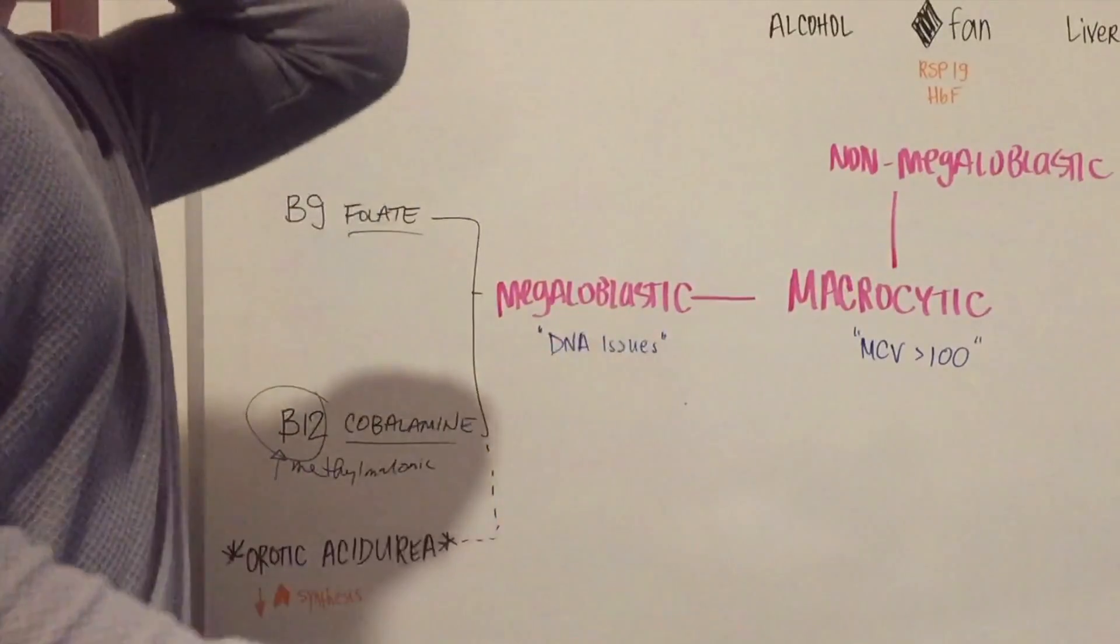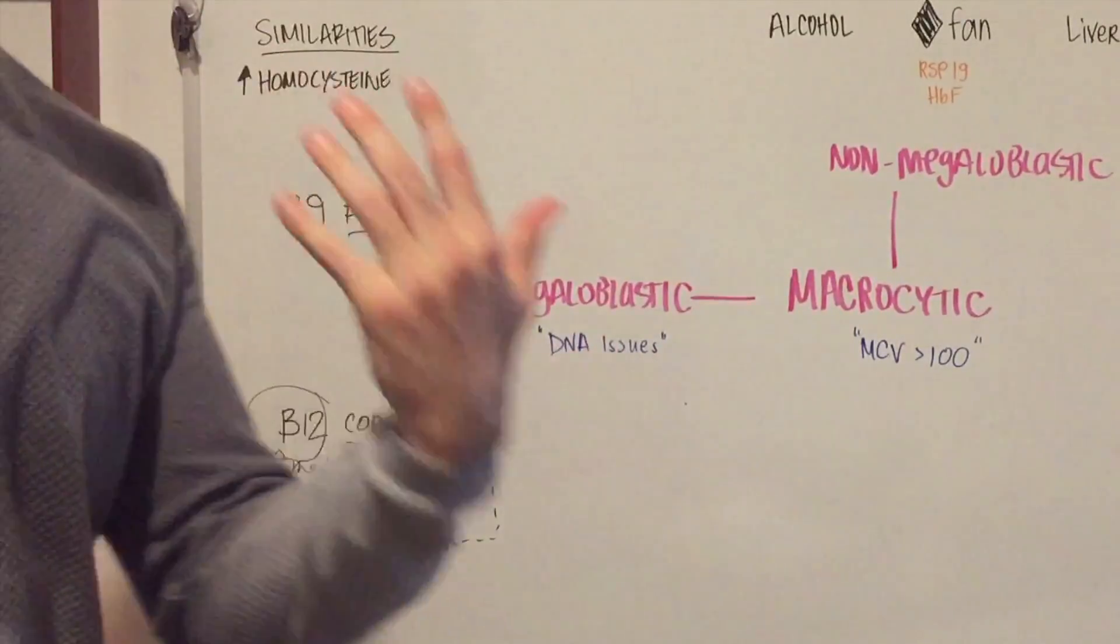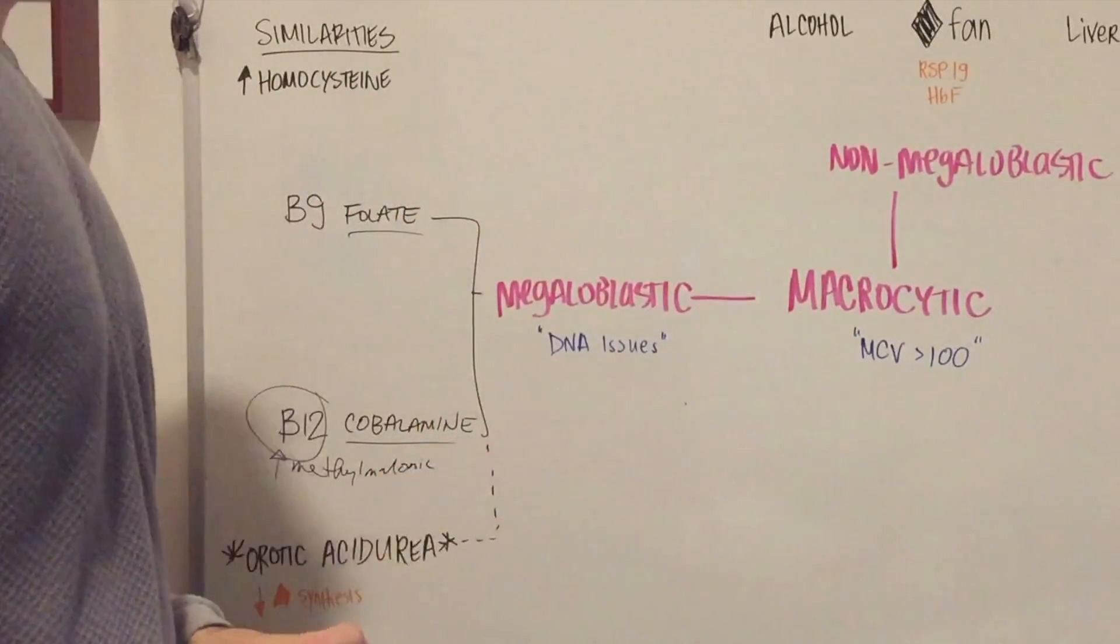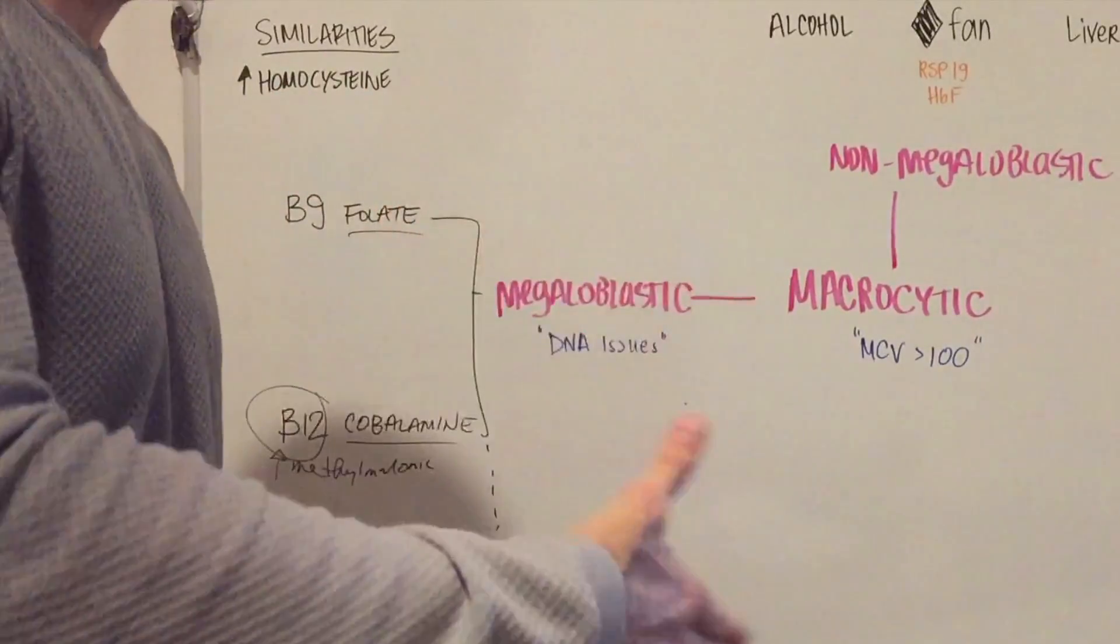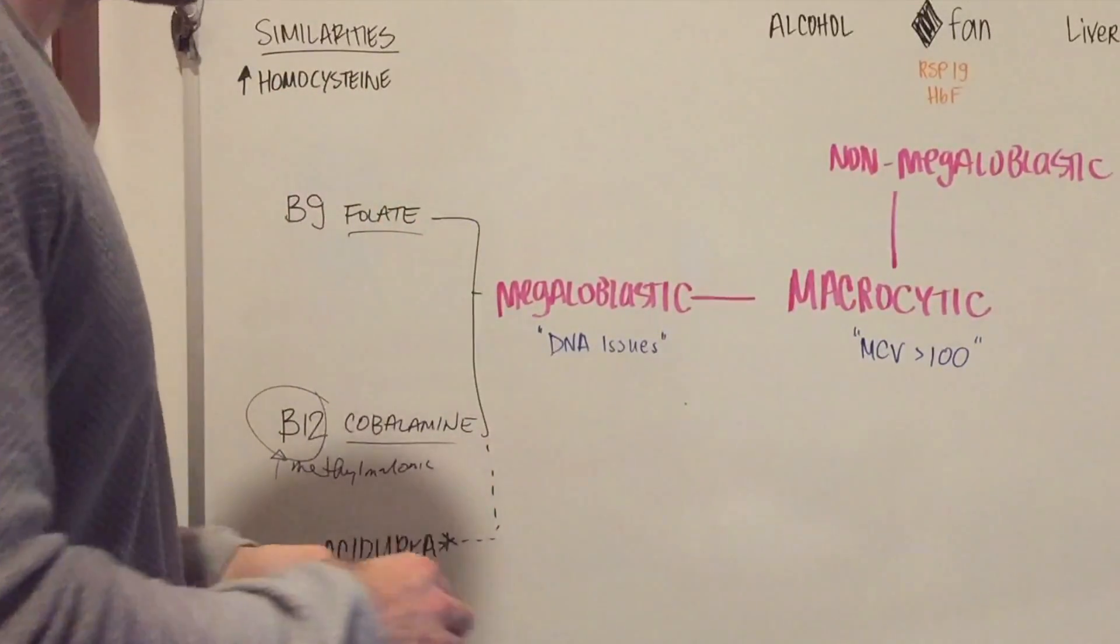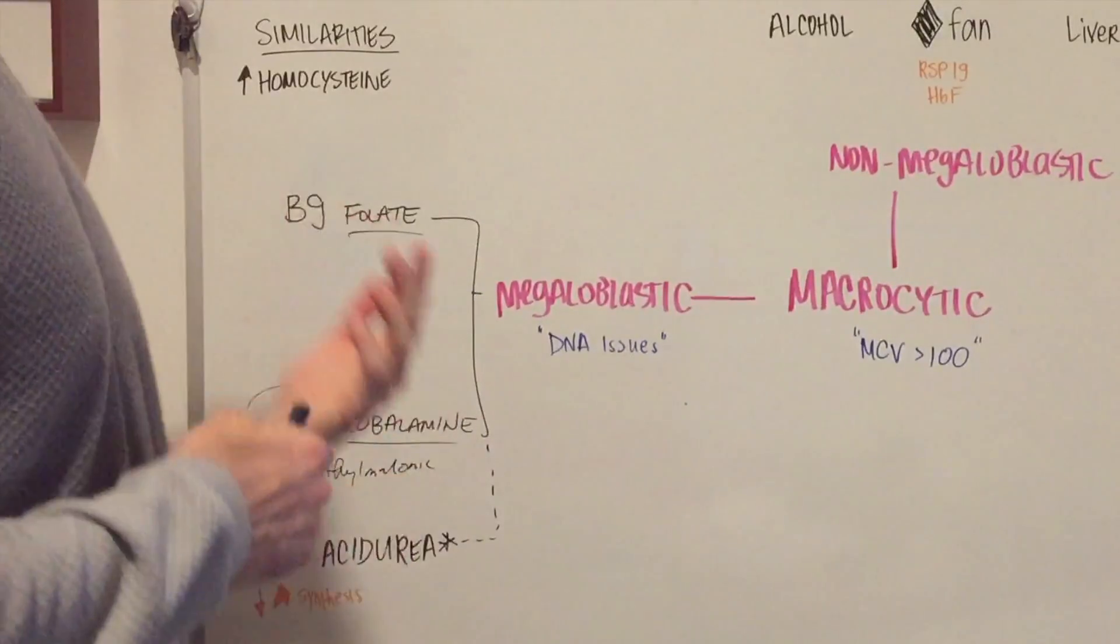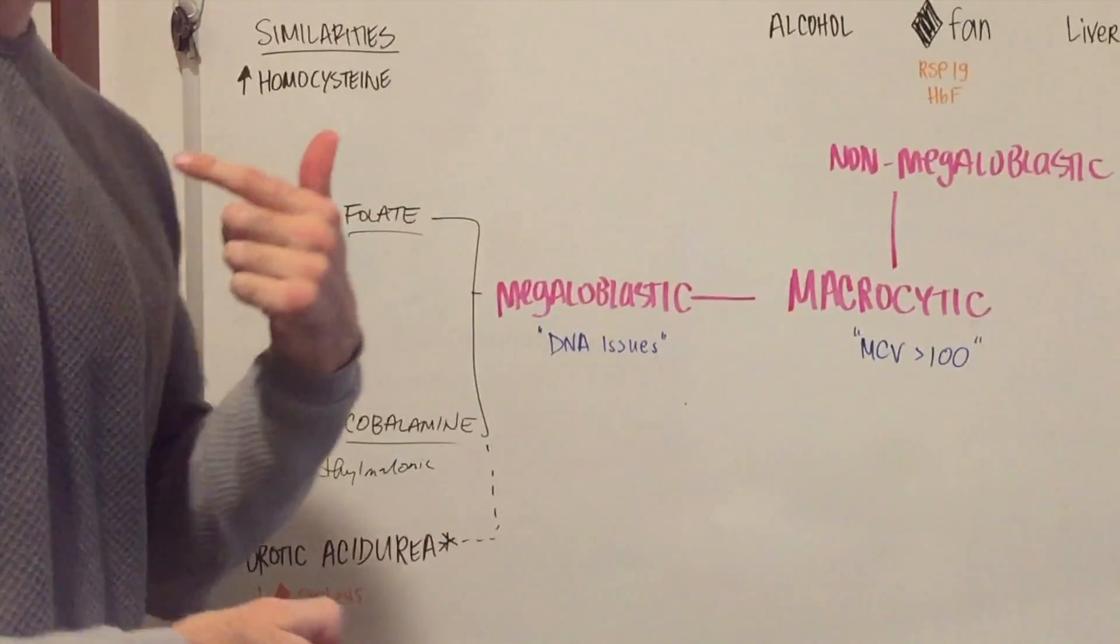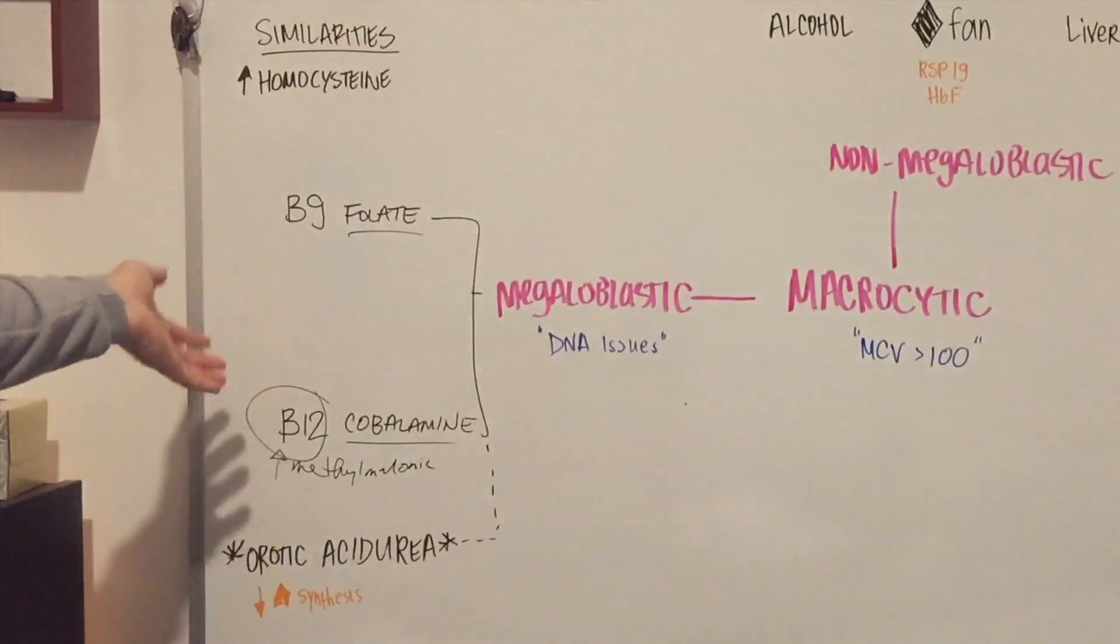The parietal cells are responsible for releasing acid as well as intrinsic factor. So what happens is there's antibodies that actually target the HK-ATPase in the stomach of the parietal cells, and that destroys the parietal cells, so it can't release intrinsic factor. So that could be another issue as to why you're not having B12.